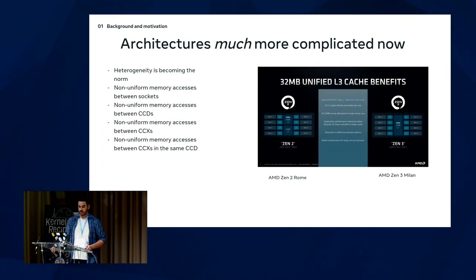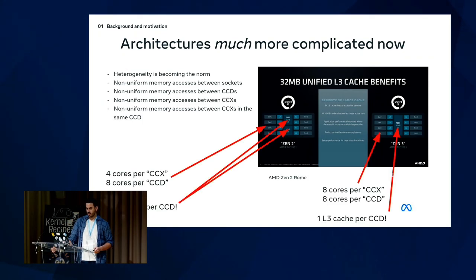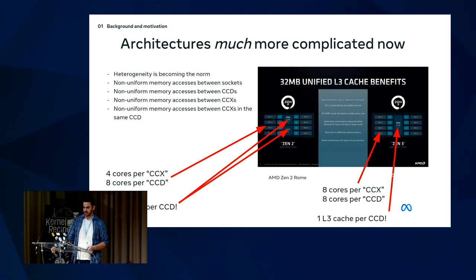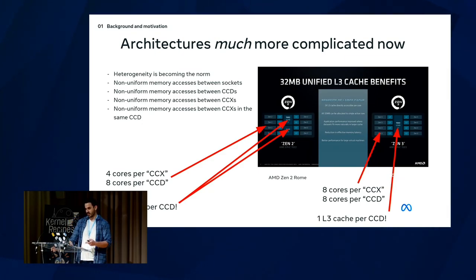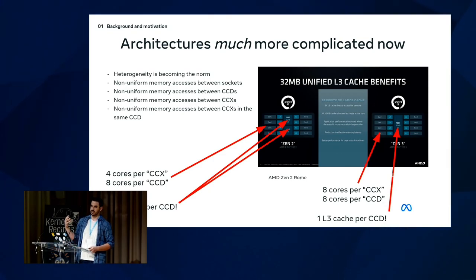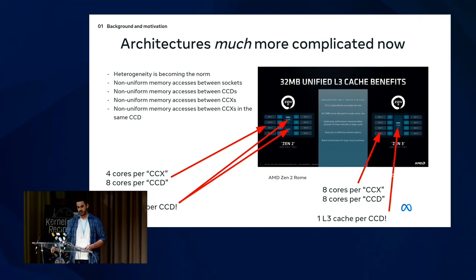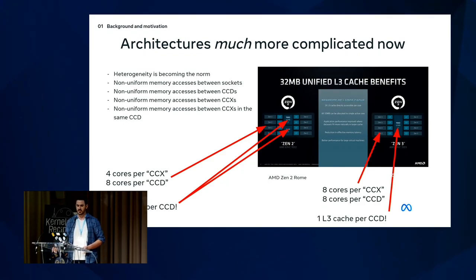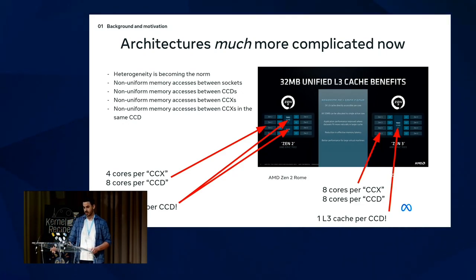Here's an example: AMD Zen 2 Rome and Zen 3 Milan. Rome has four cores per CCX and eight cores per CCD; Milan has eight cores per CCX and eight cores per CCD. A general scheduler has to work well for both, but it doesn't apply evenly. A workload fitting nicely into an eight-core CCX doesn't fit well into a CCD because tasks still have to mux through a single IO die. There's Bergamo with over 100 cores and roughly 12 CCXs, and even on single-socket machines you have non-uniform memory access. Things are way more complicated now.